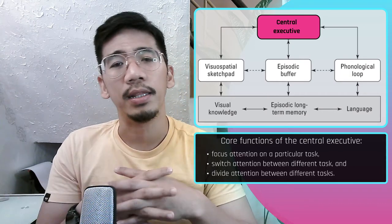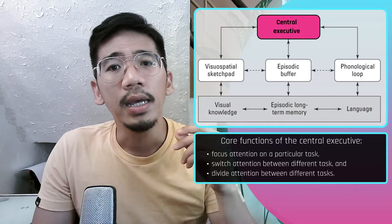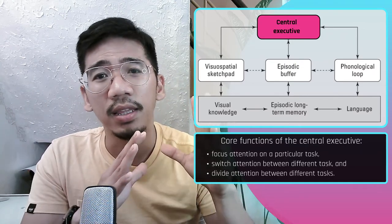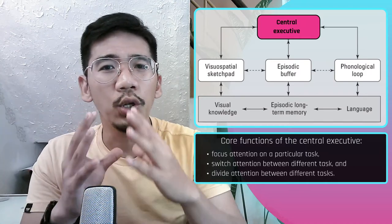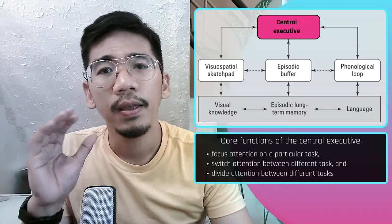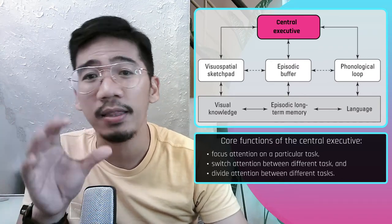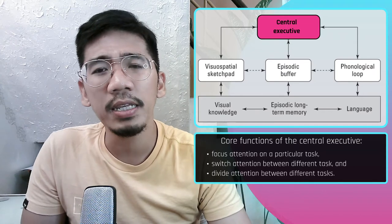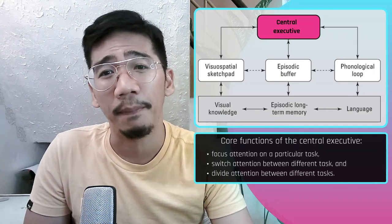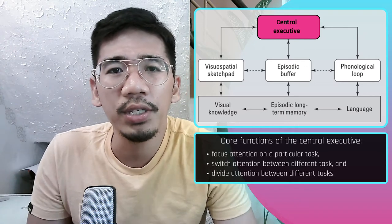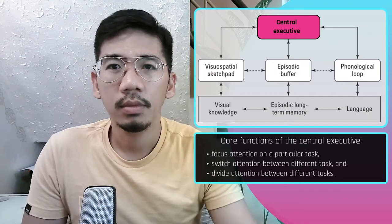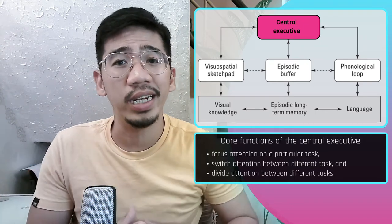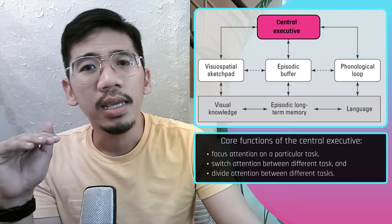An example of a task that correlates with working memory span is the anti-saccade task: something appears on a screen, participants are instructed to look at it and then look at the opposite side of the screen. People instinctively look at the object that appears, so stopping — inhibiting — yourself from looking at it is quite difficult. Participants with higher working memory capacity are better able to perform this second condition. The working memory span changes with age: it develops slowly through childhood, reaching a plateau during the mid-20s and declining in later adulthood.